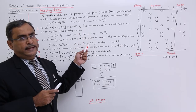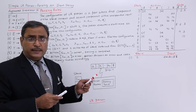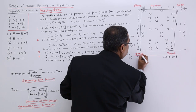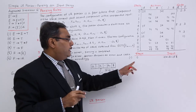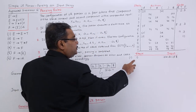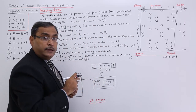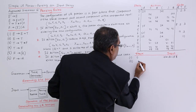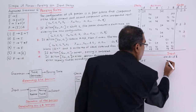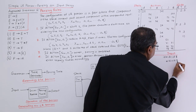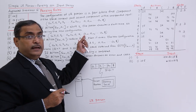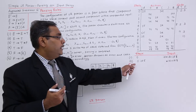Now let me go through the example. The initial state 0 is at the top of the stack, and the input is 'id star id plus id dollar'. Looking up action[0, id] gives shift 5. So in step 2 we push id and state 5 onto the stack. Id has been shifted from the input, so the remaining unexpended input is 'star id plus id dollar'.